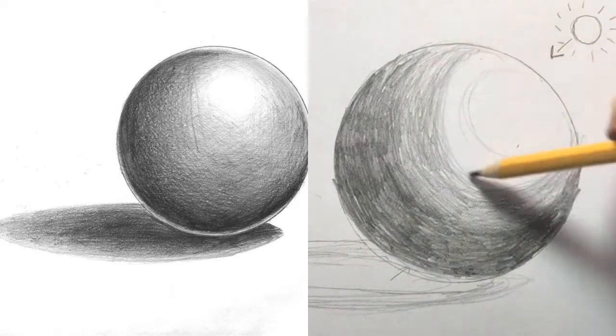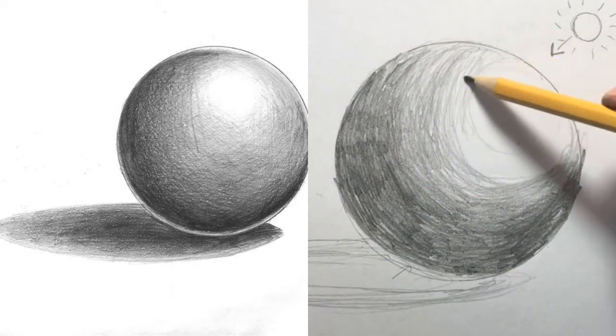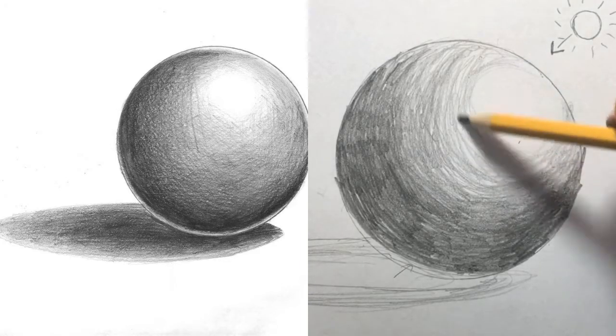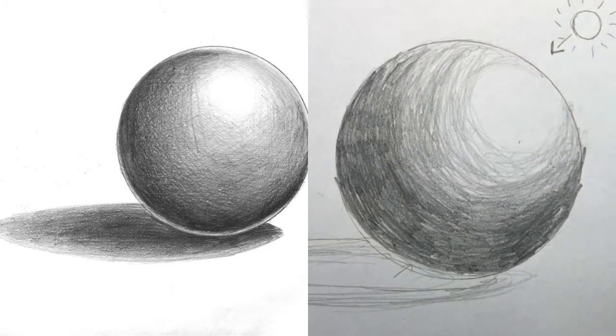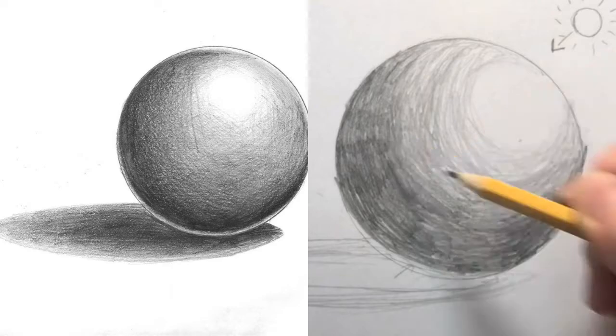Watch as I get closer to the light source. I'm getting lighter and lighter with my pencil until I get to that first ring, the one closest to the light source. That's the only part I'm going to leave completely white. That's the highlight on my sphere and it is the brightest part.